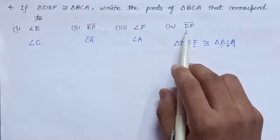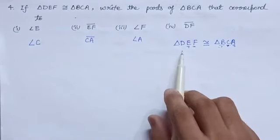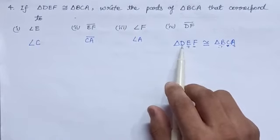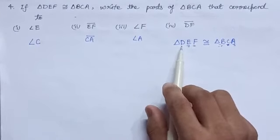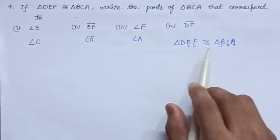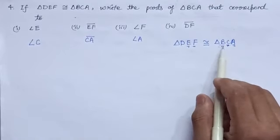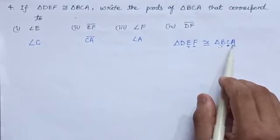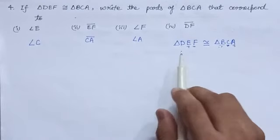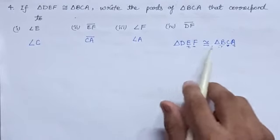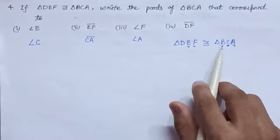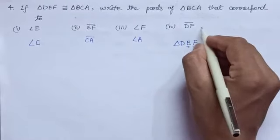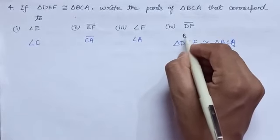The next is line segment DF. In triangle DEF, you can see the position of D and F is first and third. Similarly, the first and third positions in triangle BCA are B and A. Hence, line segment DF corresponds to line segment BA. Our answer is BA.